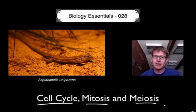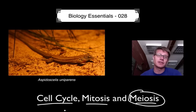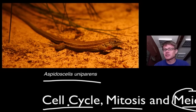Hi, it's Mr. Andersen. Welcome to Biology Essentials video 28. This is on the cell cycle, mitosis and meiosis — in other words how we go from one cell to all the cells, the trillions of cells inside our body. Meiosis is important because that's how we make sex cells.